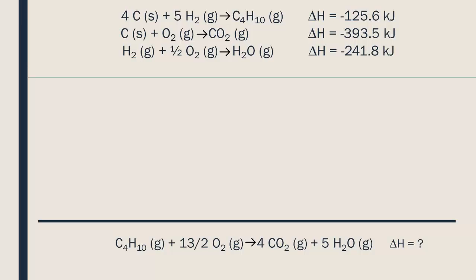The first thing we need is C4H10 as a reactant. Looking at our intermediate reactions, we see that C4H10 is found in the first reaction, but as a product. If we invert the reaction, we get it as a reactant instead. We also have to invert the sign on the enthalpy value.